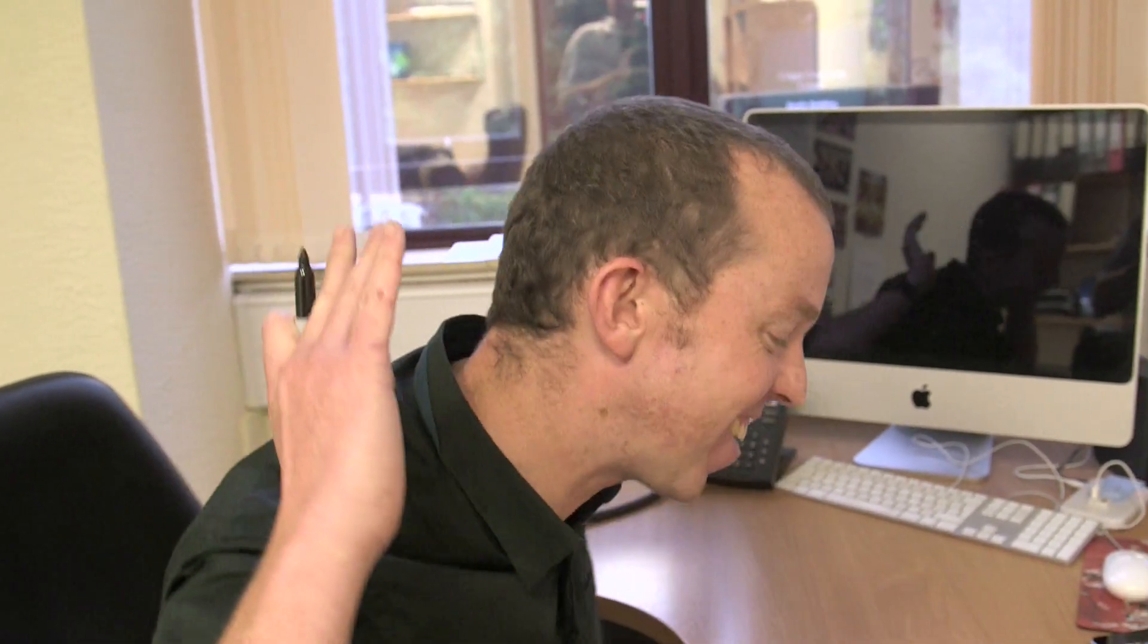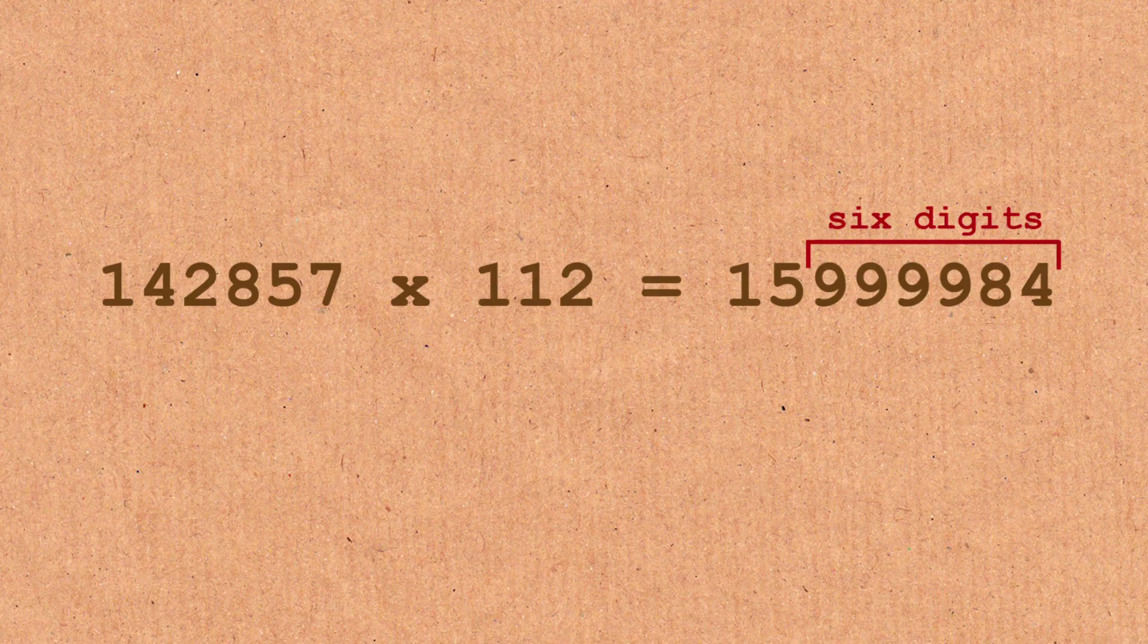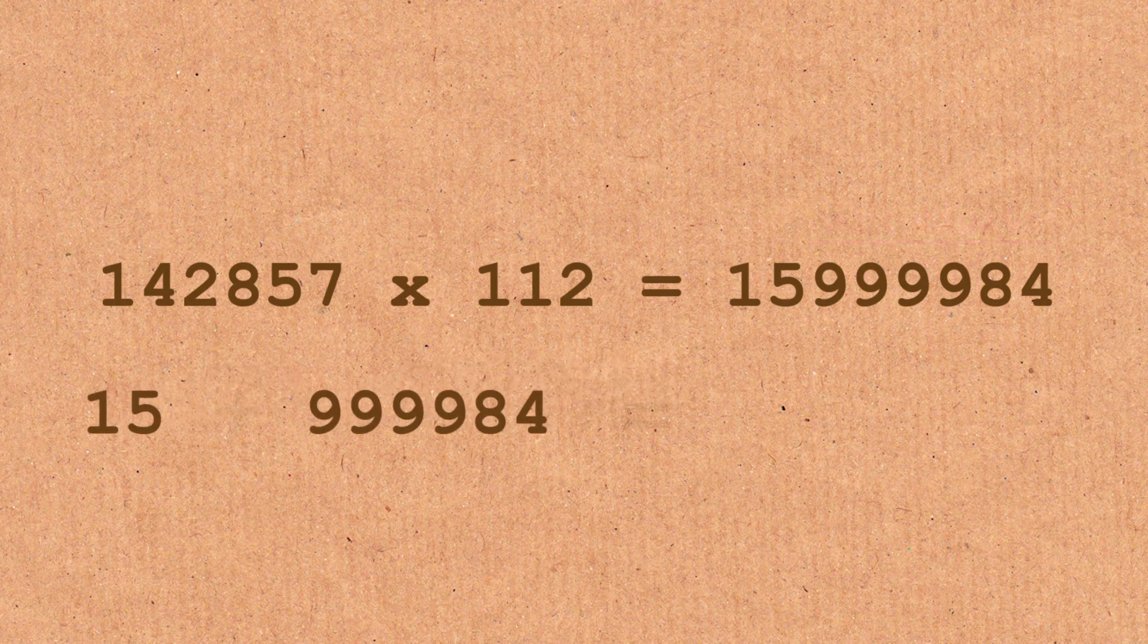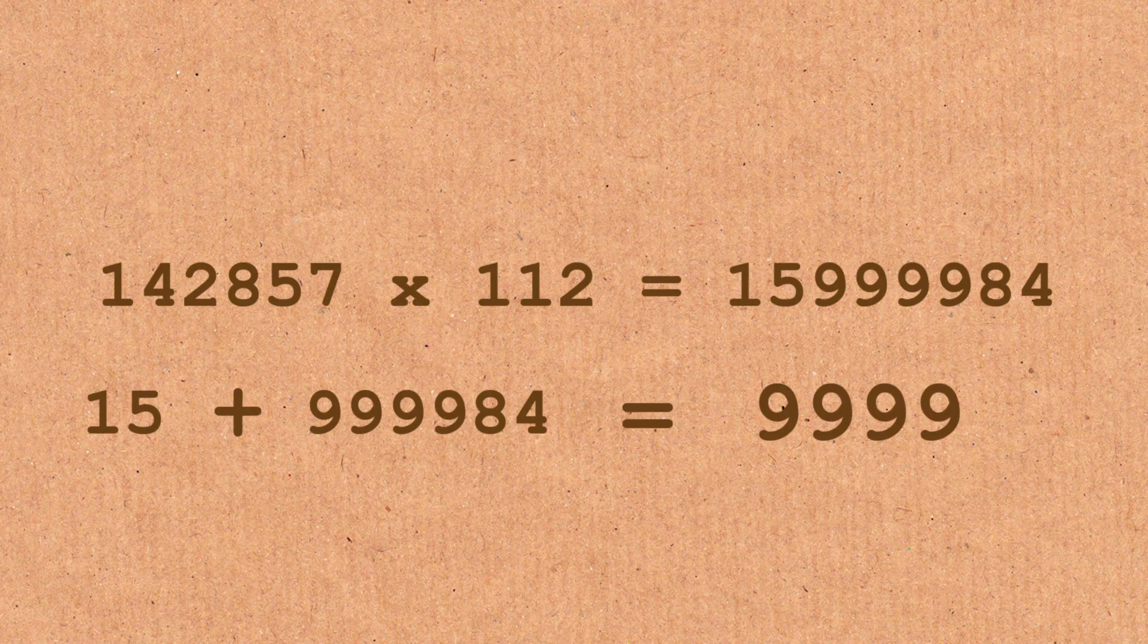You ruined it with this. What? Do multiples of seven bring us... Multiples of seven are the only ones. If they do something else, they do something else. Let's run with it. Okay. Multiples of seven, and we'll do it. We'll take the last six. Fifteen plus nine, nine, nine, nine, eight, four equals nine, nine, nine, nine, nine.